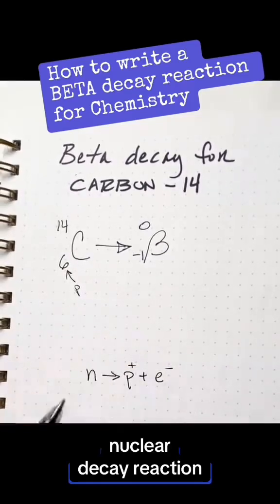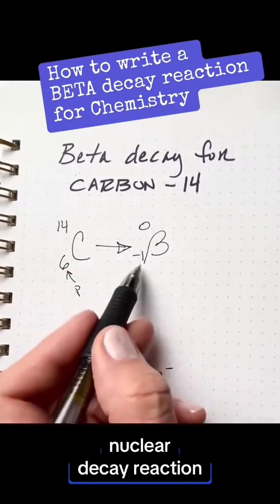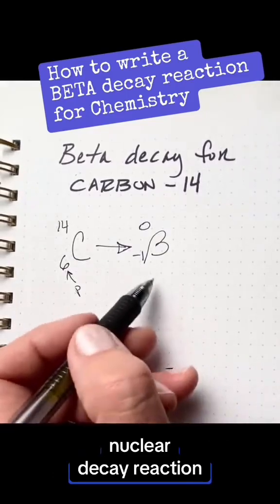I know, it's really weird. So just trust me that an electron does come out of the nucleus, this is not your typical electron.